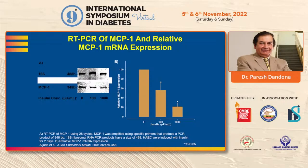MCP1, a major chemokine involved in atherosclerosis and in the movement of monocytes from the blood circulation into the endothelium, is also inhibited by insulin.